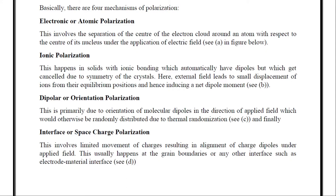Next is ionic polarization. This happens in solids with ionic bonding, which automatically have dipoles that get cancelled due to the symmetry of the crystals. The external field leads to a small displacement of ions from their equilibrium positions, inducing a net dipole moment. In ionic solids, both positive and negative ions are present. In equilibrium they are equal in number, so their dipoles cancel due to crystal symmetry. When an external field is applied, there is a small displacement of ions from their original positions, resulting in ionic polarization.